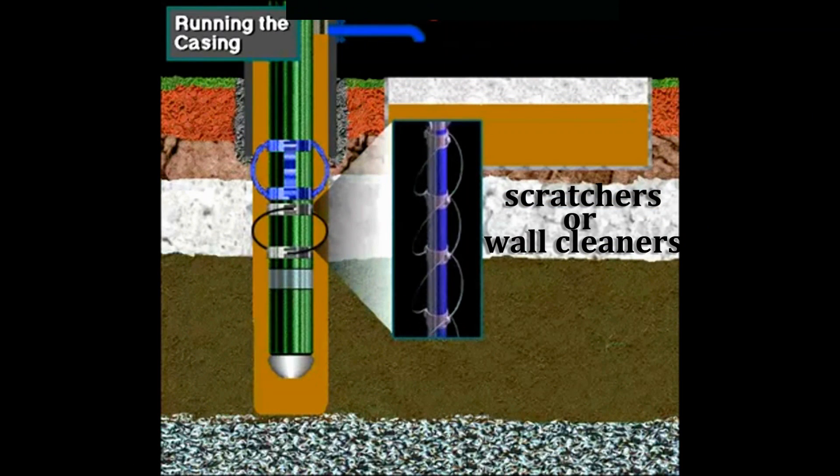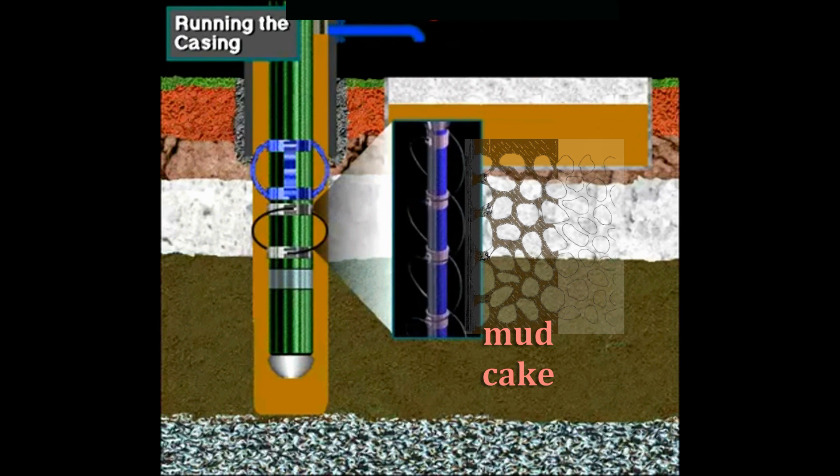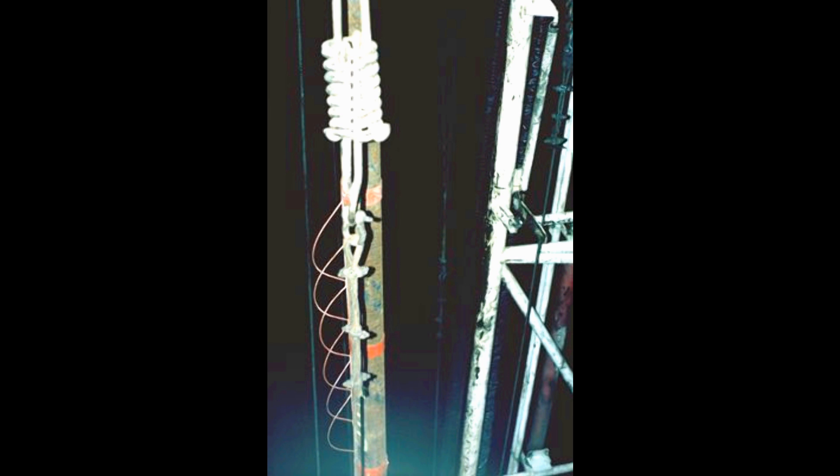Next are the scratchers or wall cleaners. They remove mud cake from the sides of the hole. Attached to the outside of the pipe, the scratchers allow the pipe to make better contact with the sides of the hole as the cement is pumped into the annulus.